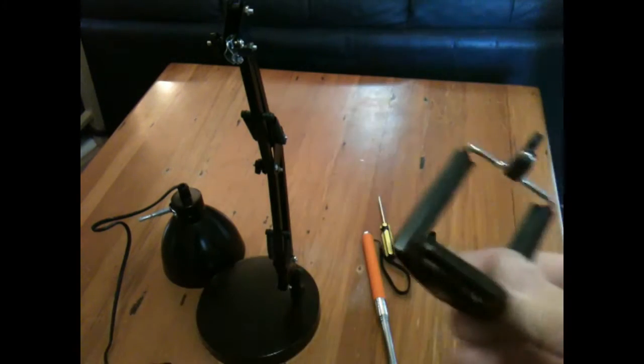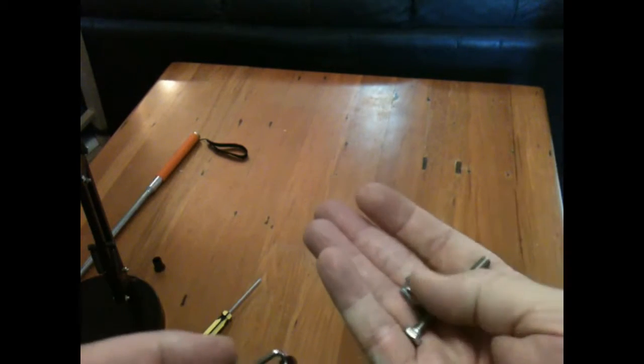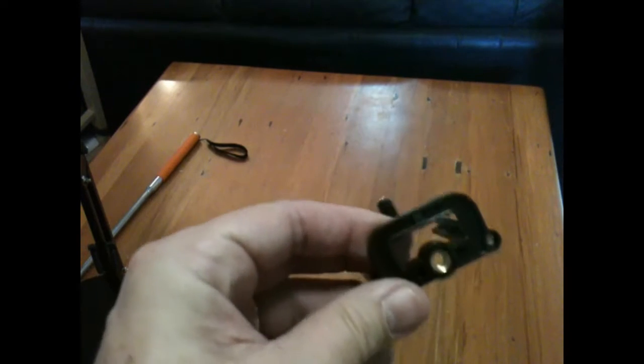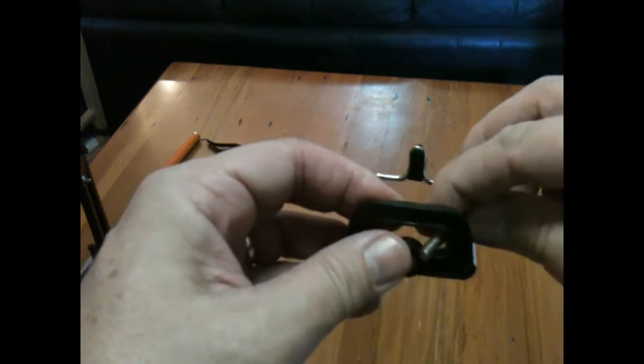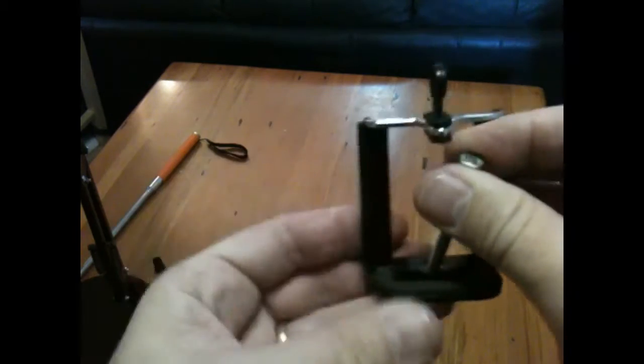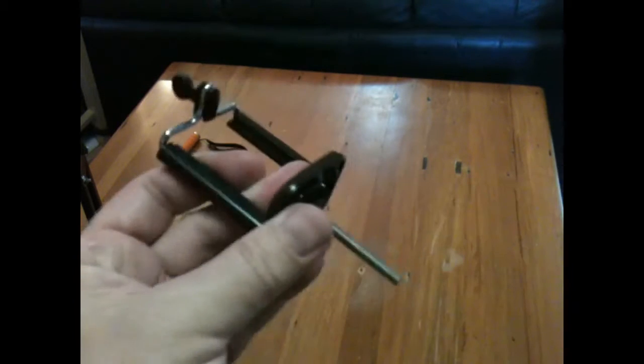Now in order to attach the cell phone mount onto the jib, I use an old bolt and two nuts and a washer that I found in my collection of spare parts at the bottom of my tool kit. The bolt goes into the screw hole on the cell phone mount, then a washer and then a nut to hold it in place.